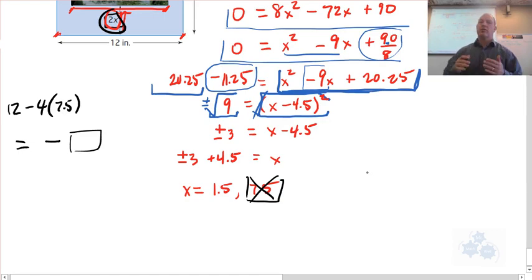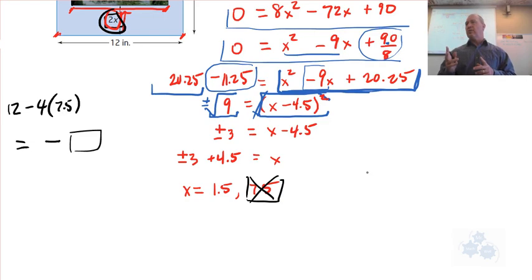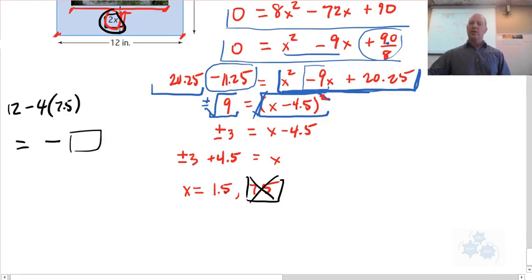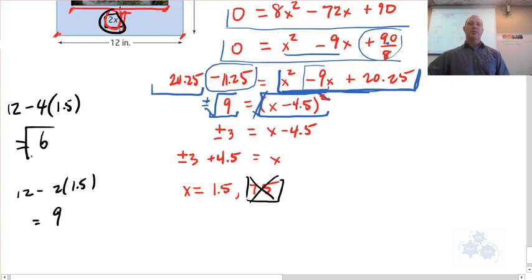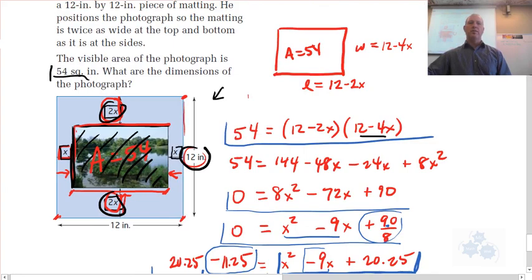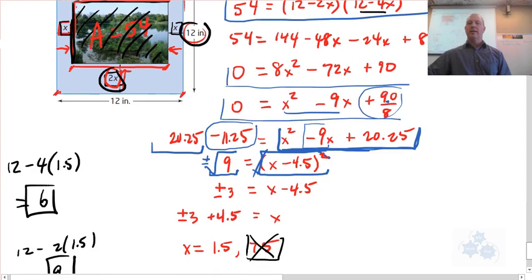So again, when you're solving mathematically like this, especially with a quadratic, you're probably going to get two answers. And one of the answers may not be reasonable. It may not apply to the question, so you reject it. Now let's check the other one. What about 1.5? Is that going to work? Well, 12 minus 4 times 1.5, that's going to be 6. So this is going to be a dimension of 6 over here. 12 minus 2 times 1.5, that's going to equal 9. So those are reasonable dimensions. Right? And if the visible area is 54 square inches, 6 times 9 is 54.